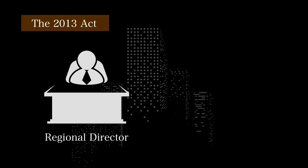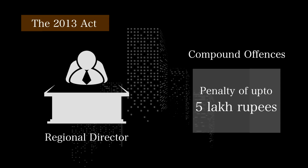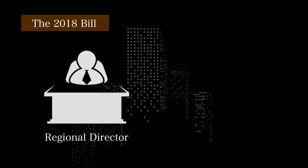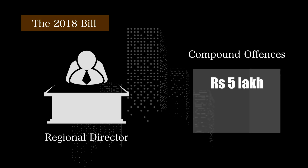Similarly, under the Act, the Regional Director can compound offences with a penalty of up to 5 lakh rupees. All offences where the maximum fine prescribed is more than 5 lakh rupees are compounded by the National Company Law Tribunal. The Bill increases this monetary jurisdiction of the Regional Director from 5 lakhs to 25 lakh rupees.